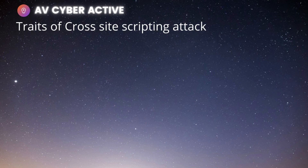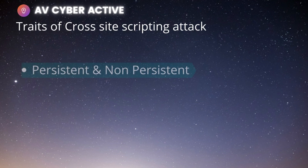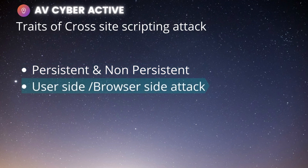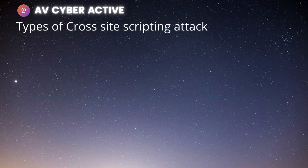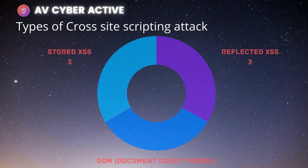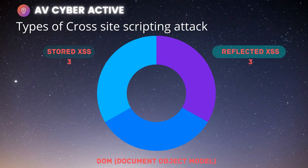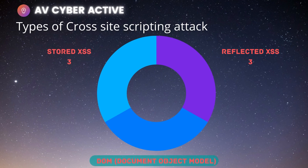The key traits of cross-site scripting: it's either persistent or non-persistent, it's a browser-side attack, and it always targets vulnerable web applications to inject or store its code. The three most common types are stored cross-site scripting (persistent), reflected cross-site scripting (non-persistent), and DOM cross-site scripting, which stands for Document Object Model.